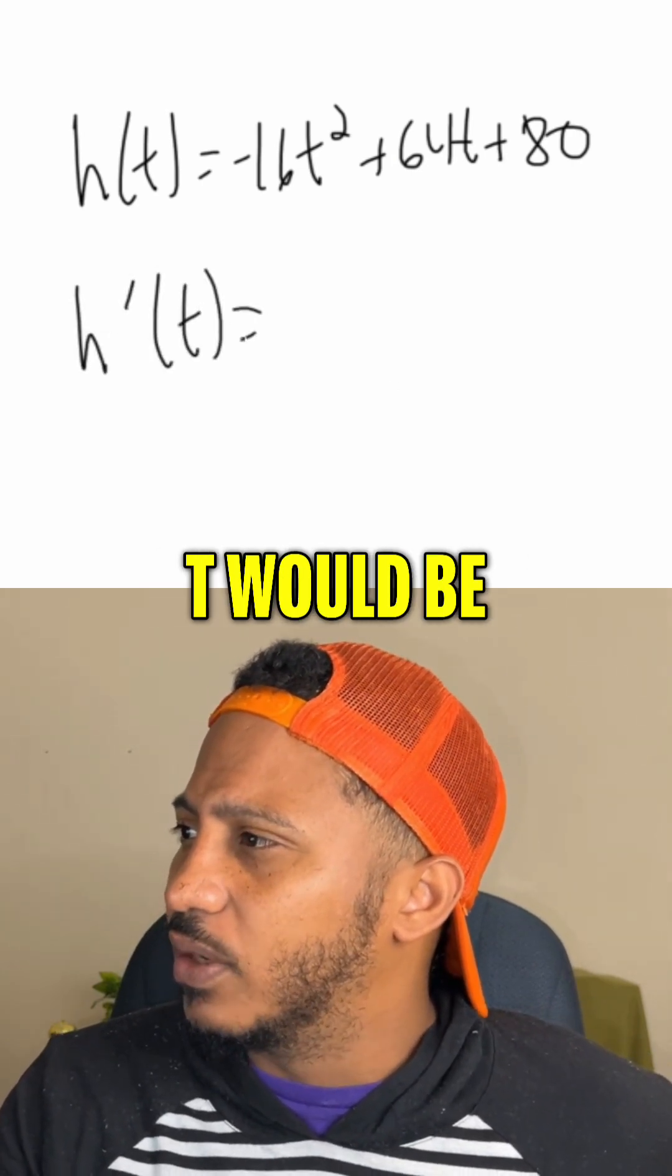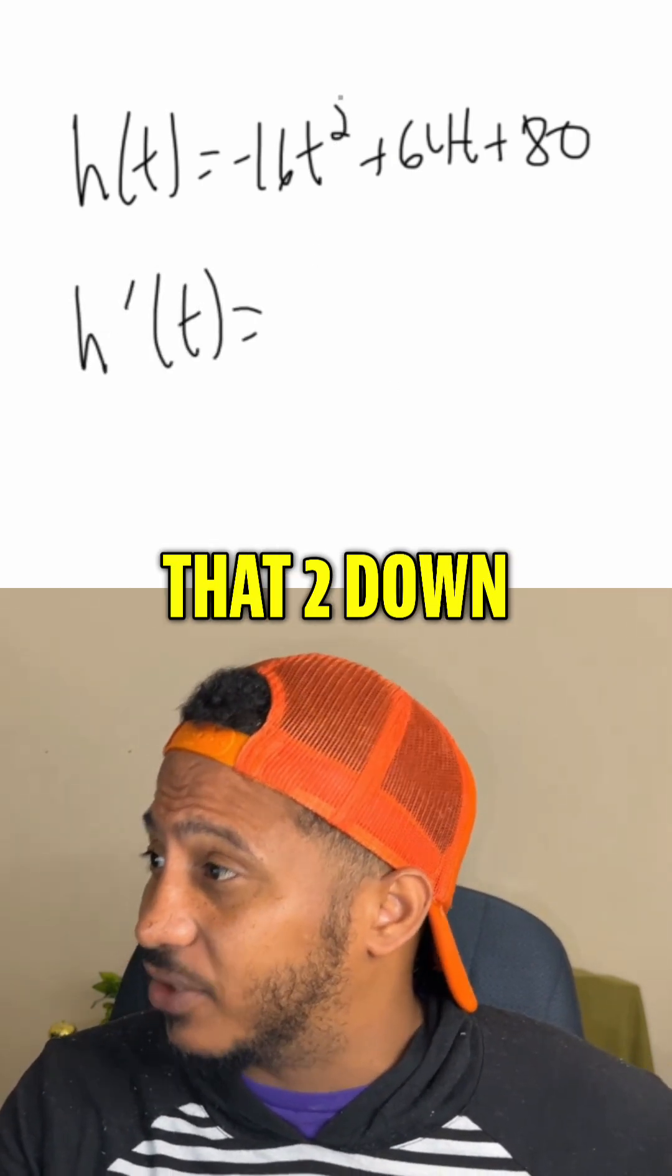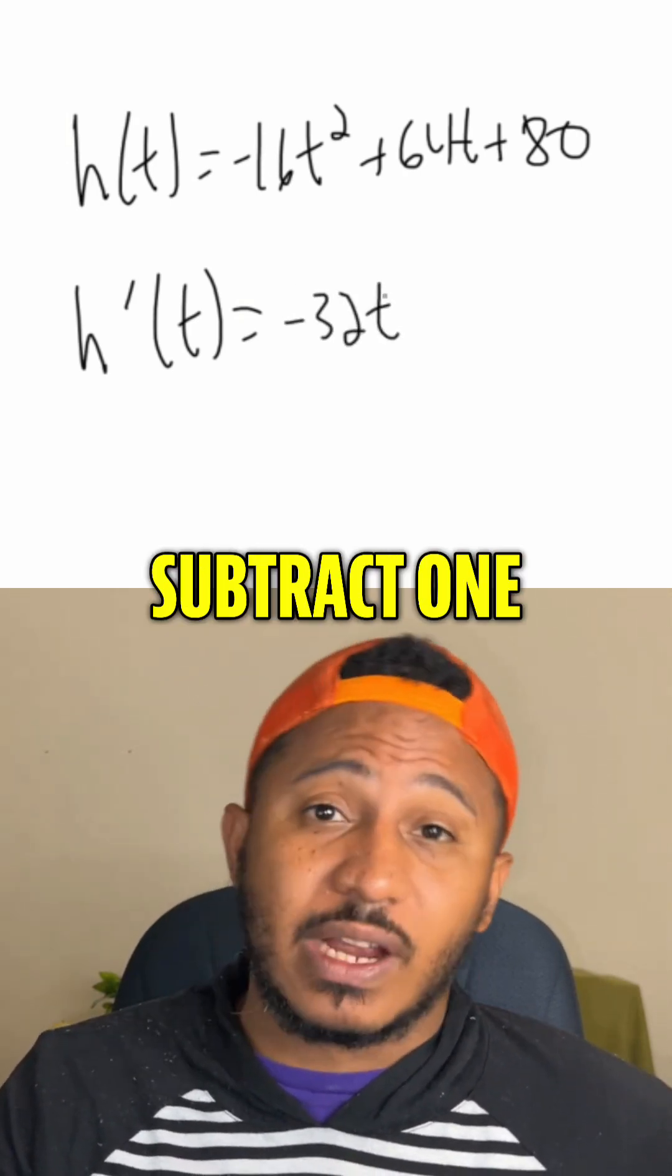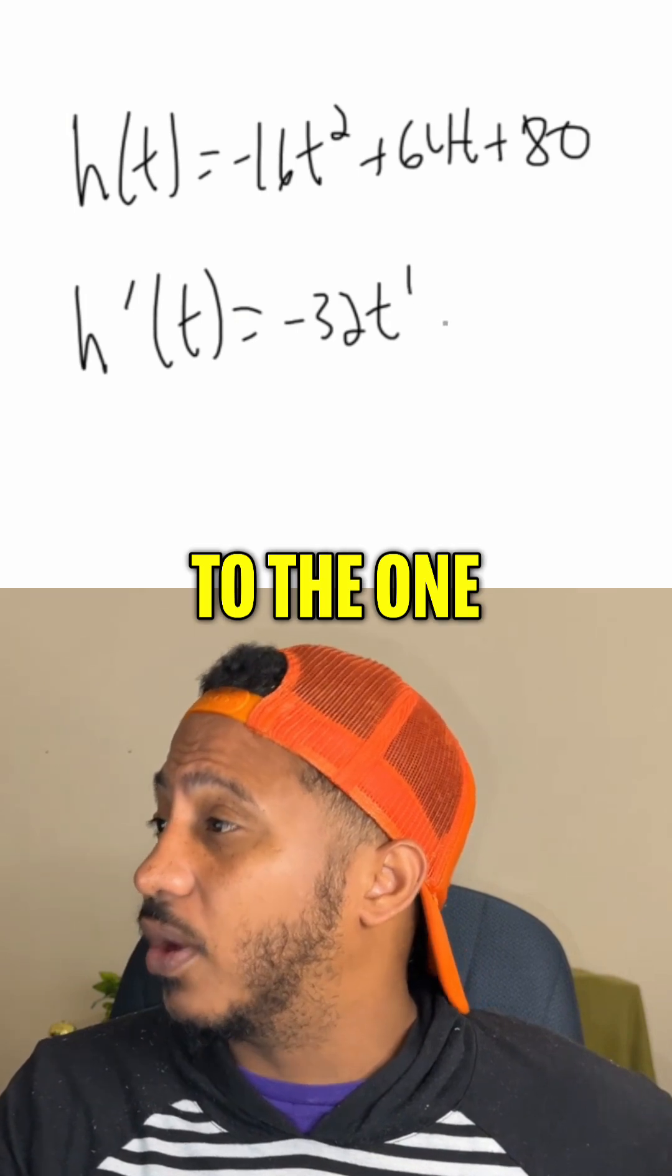So h'(t) would be, well, our power rule says take that power down, that 2 down, multiply it by the coefficient in front. So that's -32t and then subtract 1 from that power, so to the 1 plus,